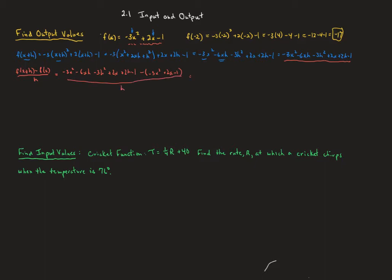I'm going to distribute that negative sign. So there's still the negative 3x squared, minus 6xh, minus 3h squared, plus 2x, plus 2h minus 1. That becomes then a plus 3x squared, a minus 2x, and a plus 1, still all over h.